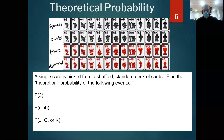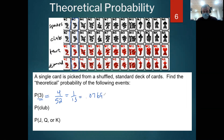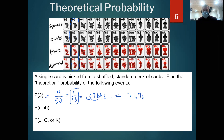Last time, or last video, we talked about theoretical probability, and we left off with finding the theoretical probability from a standard deck of cards — the probability of picking a 3. There are 52 cards in the sample space. How many of them are the number 3? That's 4 out of 52, which we reduced to 1/13, which converts to about 7.6% — less than 1 out of every 10, which we knew because it's 1 out of every 13.